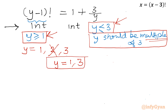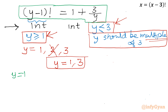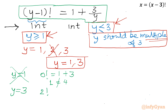Let us check both values. For y = 1: LHS is (1-1)! = 0! = 1, and RHS is 1 + 3 = 4. Since 1 ≠ 4, y = 1 is rejected. For y = 3: LHS is (3-1)! = 2! = 2, and RHS is 1 + 3/3 = 1 + 1 = 2. Since 2 = 2, y = 3 is our true solution.